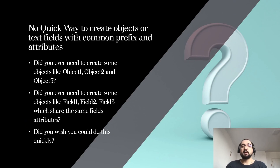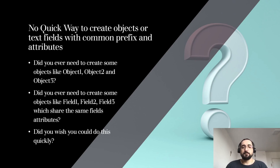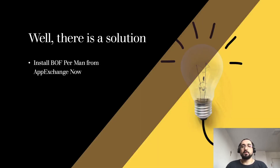Let's discuss another use case. There is no quick way to create objects or text fields with a common prefix and attributes. Did you ever need to create objects like object 1, object 2, object 3, object 4? Or did you ever need to create fields like field 1, field 2, field 3 which share the same field attributes? Did you wish you could do this quickly in one single place?